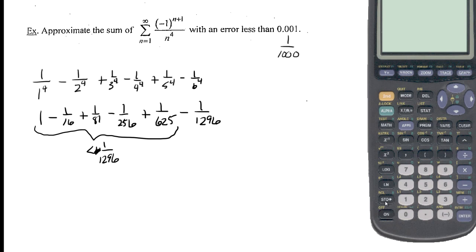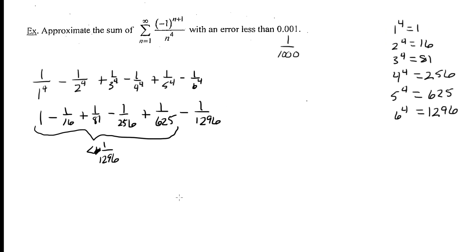Entering the first five terms into the calculator, we get 0.9475. So 0.9475 is an approximation of this series with an error less than 1/1000.